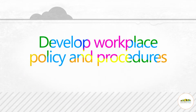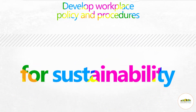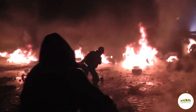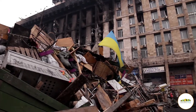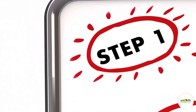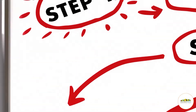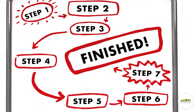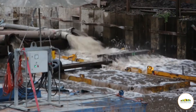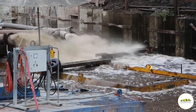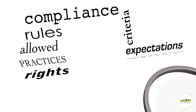Develop workplace policy and procedures for sustainability. Have you ever thought about a world with no rules? Things would be a mess and nothing would work. That's why policies and procedures are important — they set the limits, guidelines and best practices of what is acceptable behavior at a business. So if we want to reduce the impact of the business on the natural environment, we need the policies and procedures to make it happen. Without them, people are not going to follow the rules.